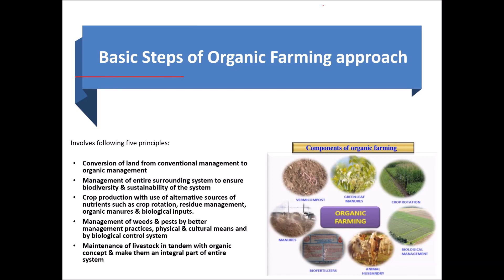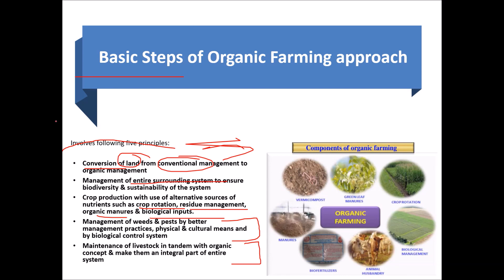What are the basic steps followed in an organic farming approach? There are five major steps. First: conversion of land from conventional management to organic management. Second: converting the entire surrounding system to ensure biodiversity and sustainability. Third: crop production using alternative nutrient sources like crop rotation, residue management, organic manures, and biological inputs. Fourth: management of weeds and pests. Fifth: maintenance and integration of livestock associated with that area.